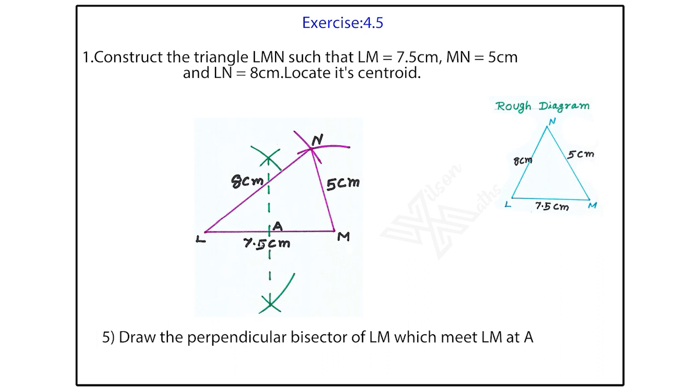Make one arc up and one arc down. With the same measurement, keep it at the point M. Make it one arc up and one arc down. Join with dotted line by using scale and pencil. This LM line and this perpendicular bisector meet at the point A.